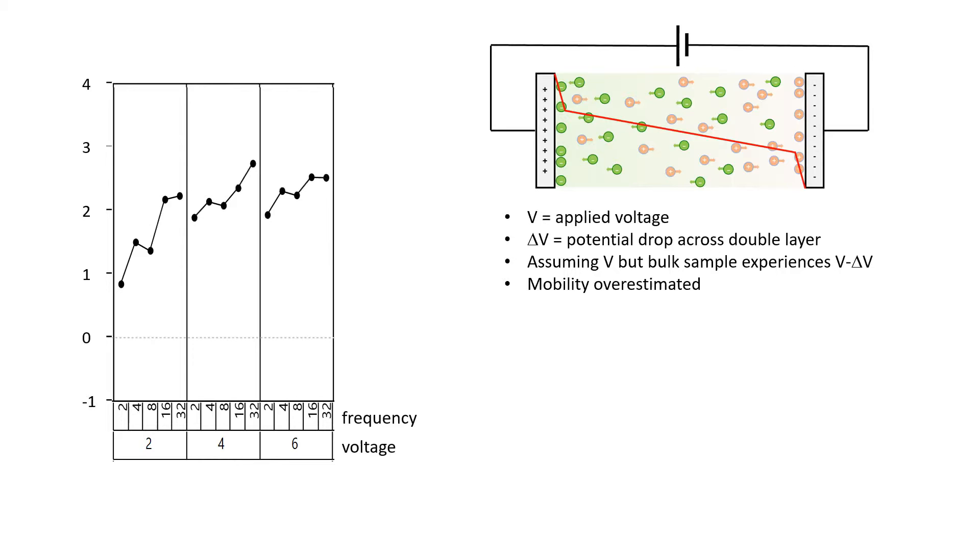which means the field reverses and the double layers keep reforming. This resembles charging and discharging a capacitor, which leads to a frequency dependence of the underestimation of mobility as well as a voltage dependence.